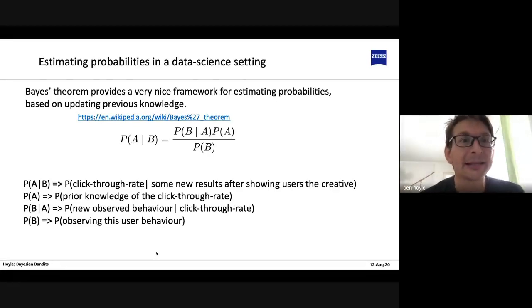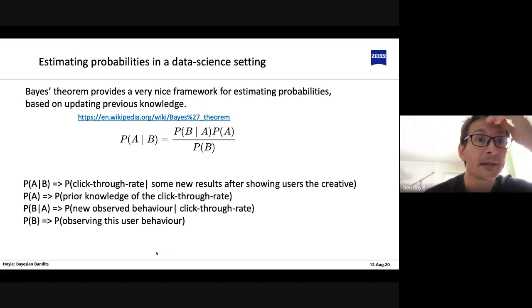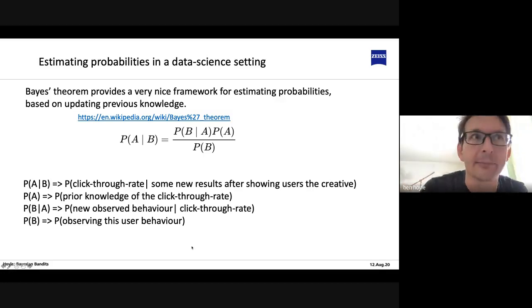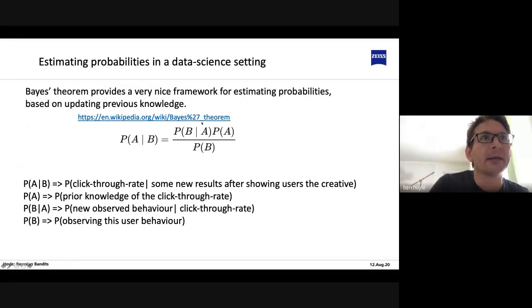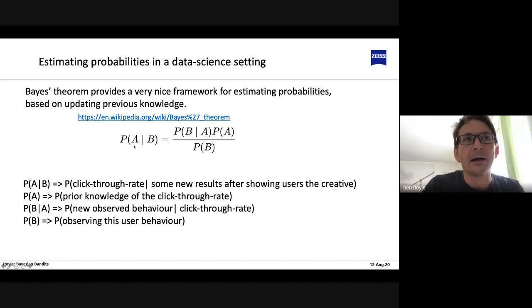Bayes' theorem provides a very nice framework for estimating probabilities — I highly recommend checking out Wikipedia on Bayes' theorem. In the language of the click-through rate problem, we want to estimate P(A|B), which is the probability of a click-through rate for some creative, given some prior knowledge we have about the click-through rate and some new observed behavior. Maybe we showed this creative to some consumers: some clicked through and some didn't. We want to use that to update our knowledge of the probability of the click-through rate for this particular creative.